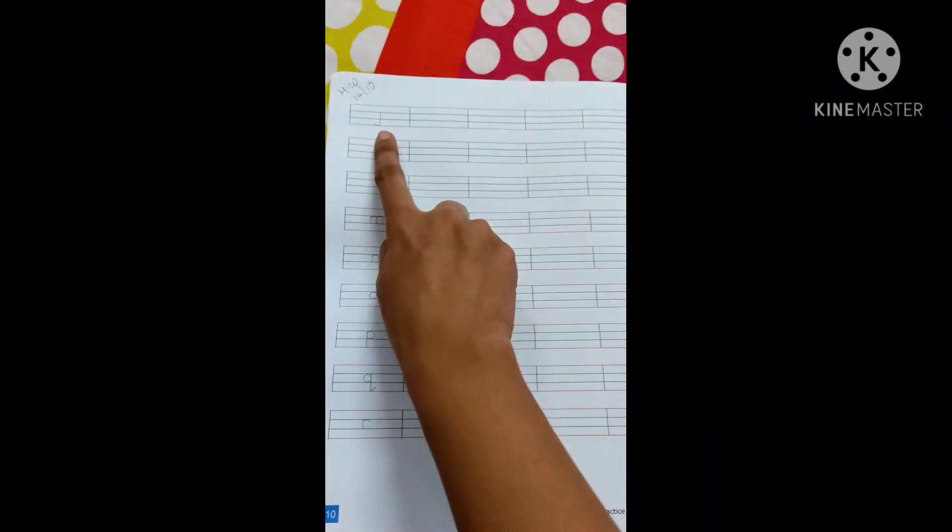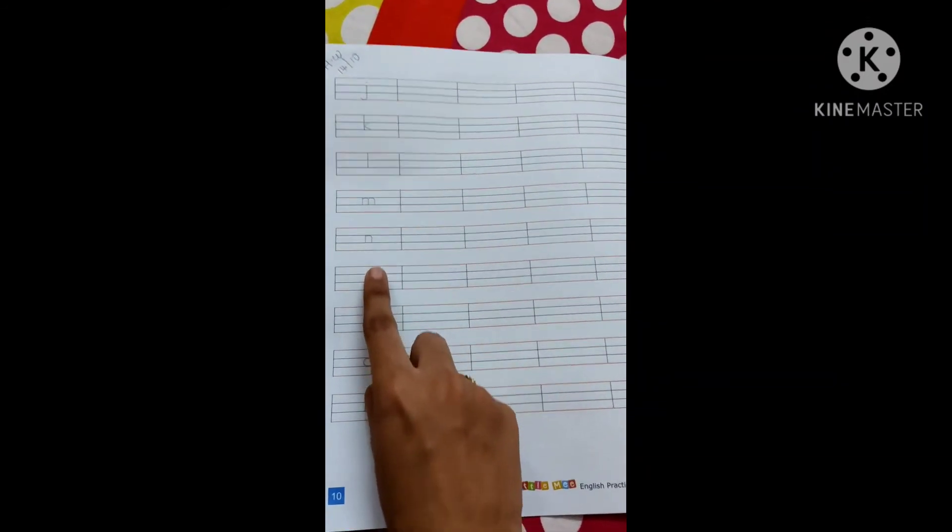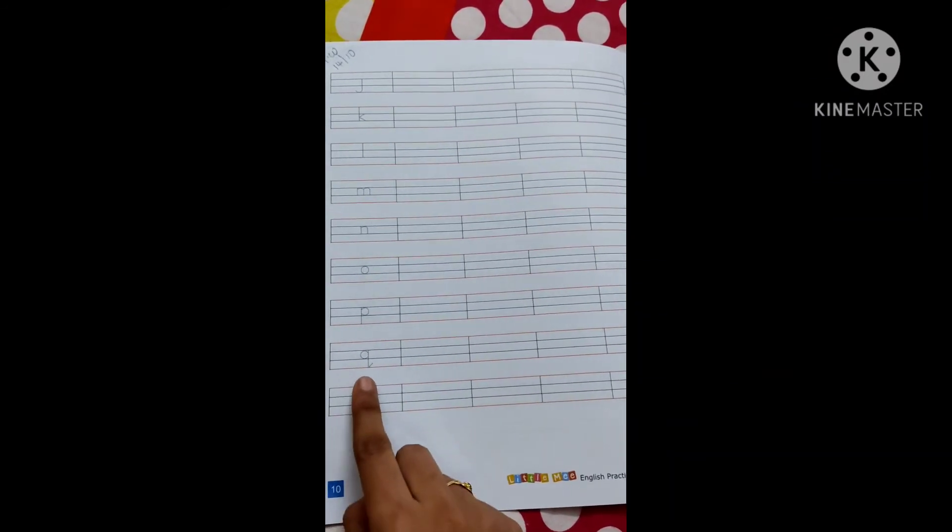Over here, children, you have to write letters J, K, L, M, N, O, P, Q, R.